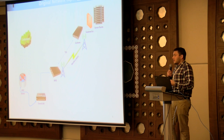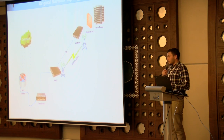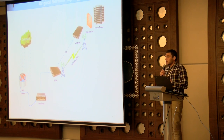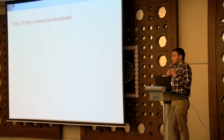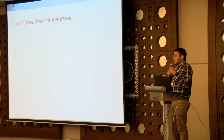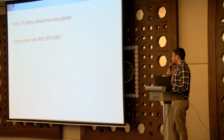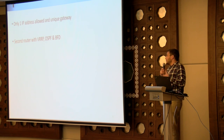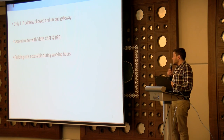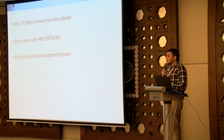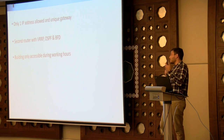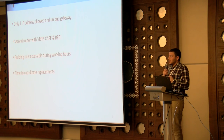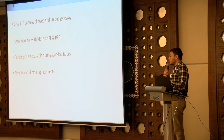Someone could think an easy solution is to add a second router; however, this wasn't that simple because the customs only allow us to access their network with one IP address, and we also need to provide them only one unique next hop to reach our networks. Additionally, the custom building is only accessible during working hours — so if a router fails at night we have to wait until morning, fulfill all the permission requirements, and then replace the failing router.